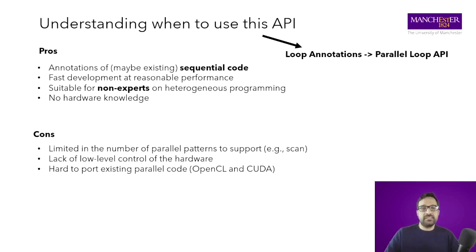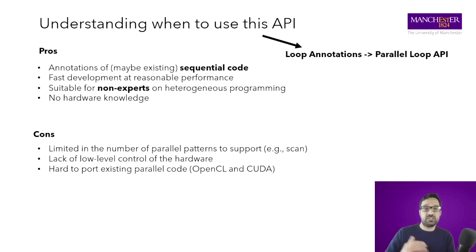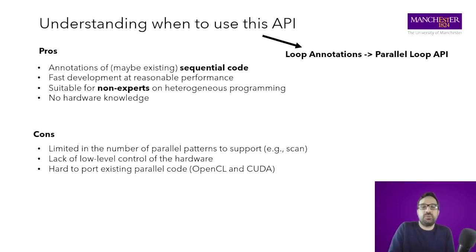Let me explain the pros and cons of this style of API. As an advantage, this annotation-based API allows the user to annotate sequential code. The user reasons about sequential code, provides a sequential implementation, and then thinks about where to parallelize in the loop. This is fast for development: if you have existing sequential Java code, you can just add annotations and get parallel code. This API is very suitable for non-expert users — you don't need to know GPU compute or the hardware details.